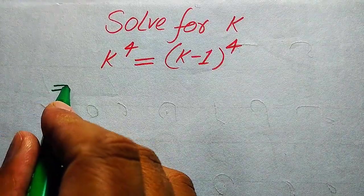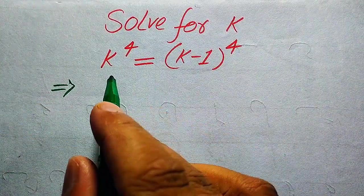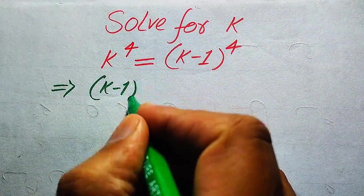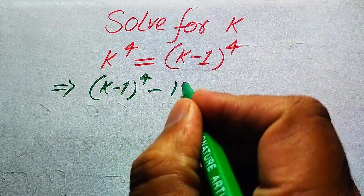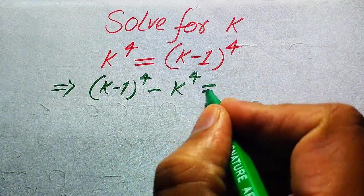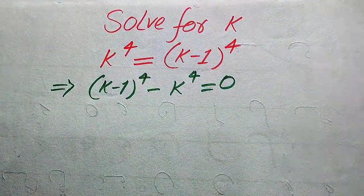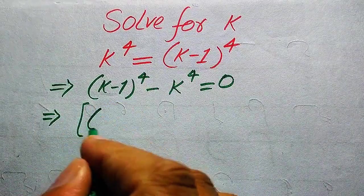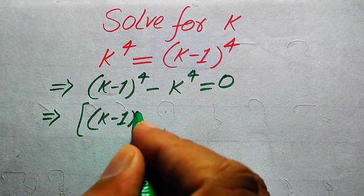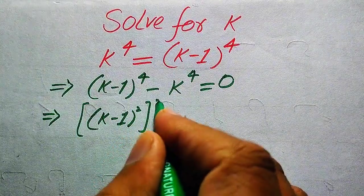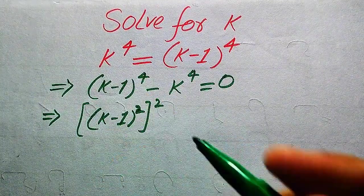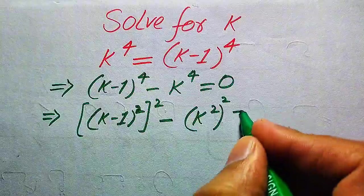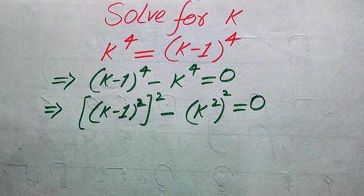First, we move k to the power of 4 to the right hand side. It will be written as k minus 1 to the power of 4 — this positive term becomes negative when moved — so the equation equals 0. We rewrite this as (k minus 1)² whole squared minus k² whole squared equals 0, breaking the 4th powers accordingly.